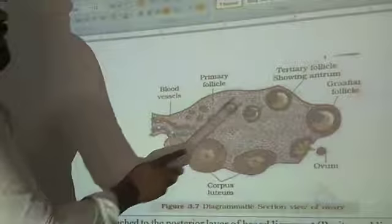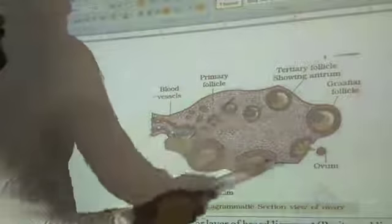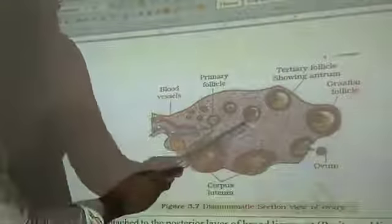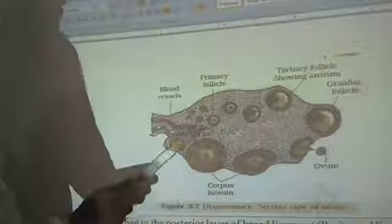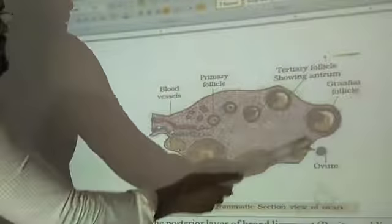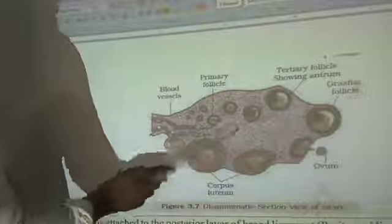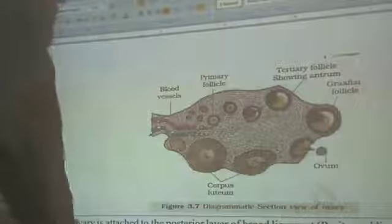The stroma of the ovary is divided into two parts: the outer cortex and the inner medulla. This outer region is called the cortex, and the inner region is called the medulla.